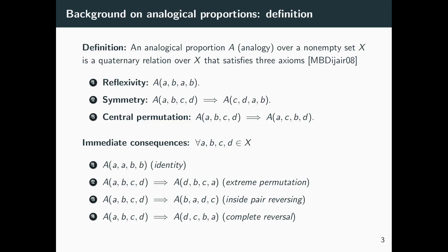To formalize analogy, analogies can be seen as quaternary relations satisfying three axioms. The first is reflexivity: an analogy should contain tuples of the form A, B, A, B. The second is symmetry: if A, B, C, D are in analogy, then C, D, A, B should also be an analogy. The third axiom is central permutation: if A, B, C, D are in analogy, then reversing the central pair gives A, C, B, D, which should also be an analogy.